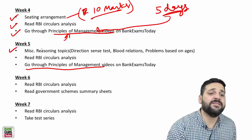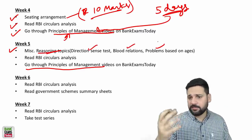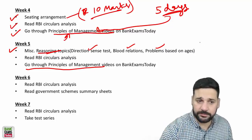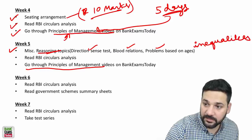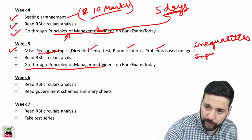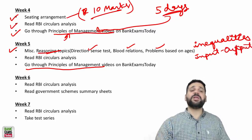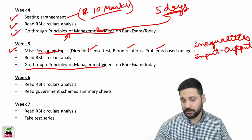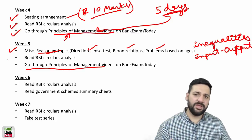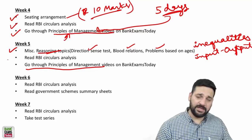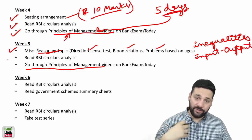In Week 5, the miscellaneous reasoning topics: direction sense test, blood relation, problems based on ages. Do these chapters. The inequalities, the input output, really important ones. You need to do these chapters in Week 5, just revise it. Because I know that most of you who are watching these videos maybe you haven't started reading the RBI circulars, you haven't started reading the Yojana, Kurukshetra. That's what I am focusing at.